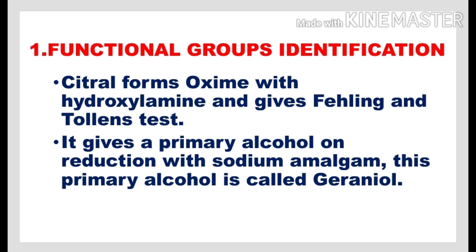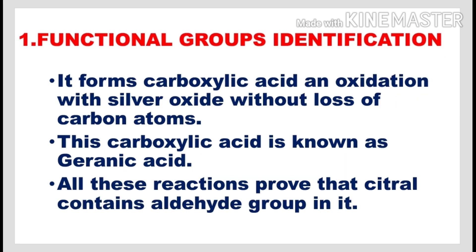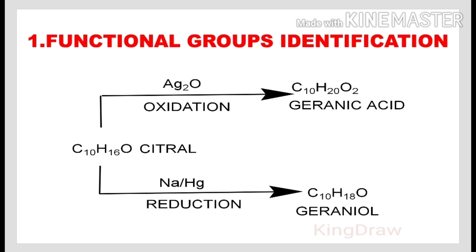Citrol forms an oxime with hydroxylamine and gives a positive Fehling's and Tollens' test. It gives a primary alcohol on reduction with sodium amalgam. This primary alcohol is called geraniol. It forms a carboxylic acid on oxidation with silver oxide without loss of any carbon atom. This carboxylic acid is known as geranic acid.